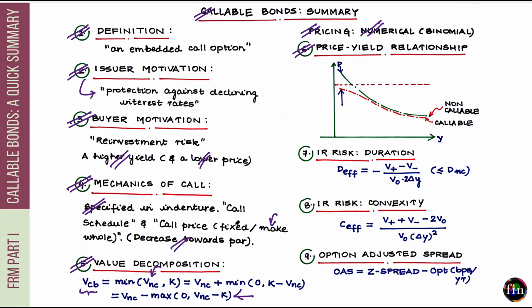The value of the call option increases when interest rates fall — in that region of the curve the value of the call option is quite sizable. The second thing to observe is that if I clearly mark the call price on this graph as a dashed line, the value of the callable bond will never rise above the applicable call price. The callable bond's price is rising as interest rates fall, but it is still kept below this horizontal line — it's experiencing something like price compression. So when interest rates fall, the price of a callable bond suffers from price compression.